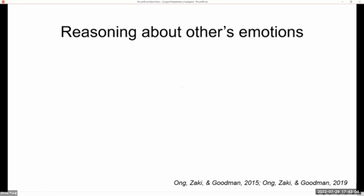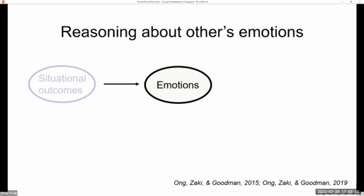So people may hold lay beliefs that situational outcomes lead to experiences of emotions. And these experiences of emotions then in turn lead to expressive behaviors such as facial movements. And if people are equipped with this causal model, then Bayesian inference can be applied to estimate the likelihood of inferring emotions given an agent's situation, given knowledge of an agent's situation, as well as their facial behaviors.